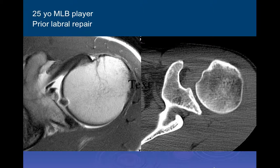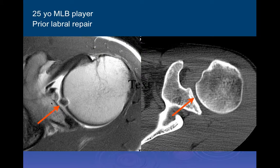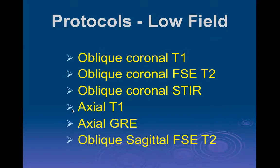Here's a 25-year-old Major League Baseball player who had a prior labral repair. We can see some metal artifact from the repair, and on this CT scan we see very little density there. Very small flecks of metal can produce rather major susceptibility artifact on MR examinations — this just shows how subtle it can be.